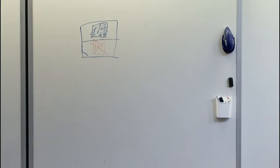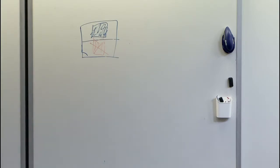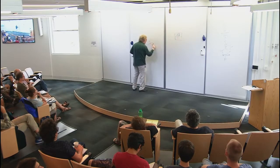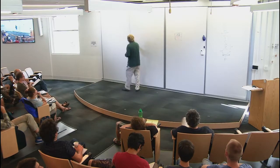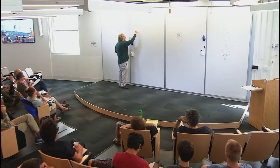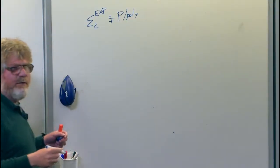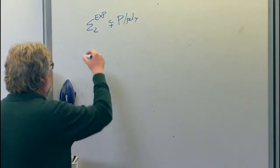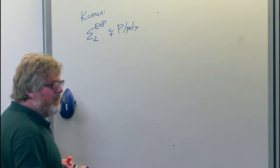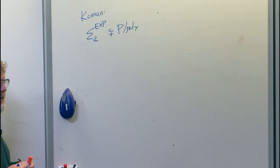The first prototypical shelf collapsing argument was due to Ravi Kanan. It's an unconditional shelf collapsing argument showing that Sigma-2^EXP is not contained in P/poly. His argument starts with a classical result of Riordan and Shannon: there exists a function f on n bits such that the minimal circuit size of f is on the order of 2^n / n. All that's important for us is that there exist functions, by a counting argument, that take exponential circuit complexity.